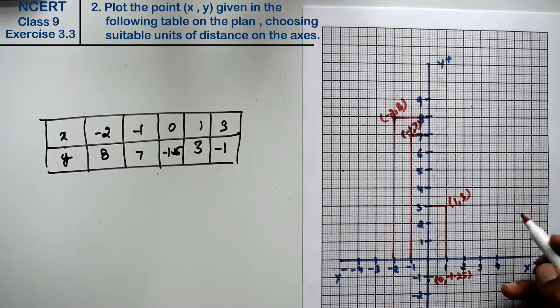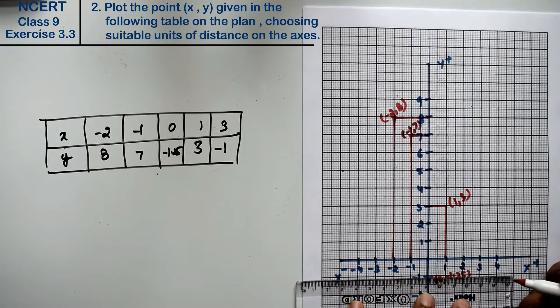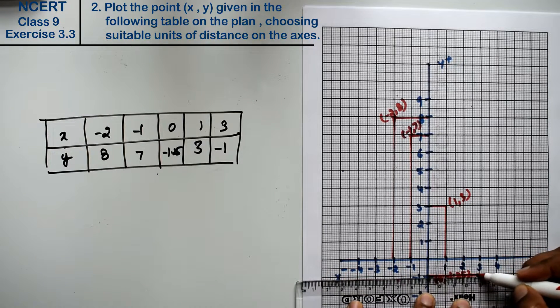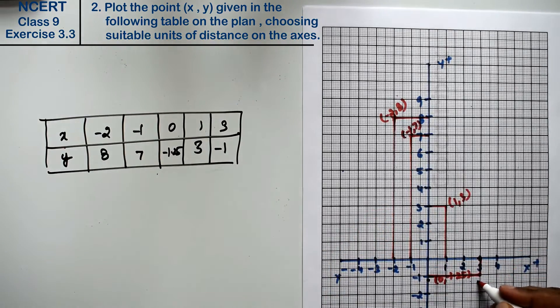Next, x 3 and y minus 1. x 3 and y minus 1. Here it is. x 3 and y minus 1 is the answer.